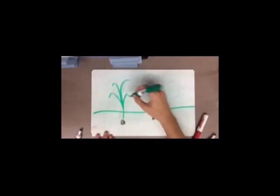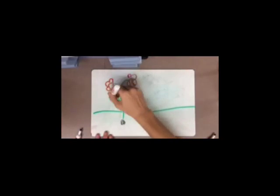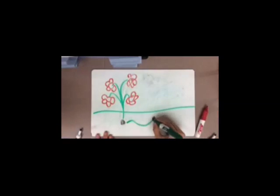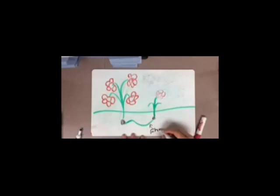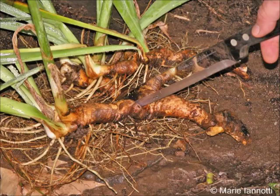A rhizome is an underground stem that grows horizontally through the soil like an iris. Other stems and roots can form off the rhizome. Rhizomes are also known as creeping rootstocks.